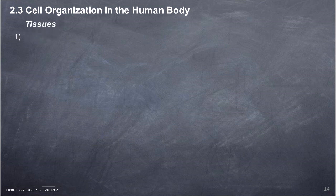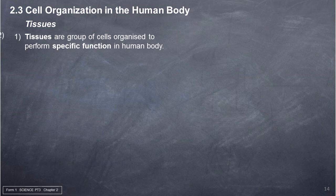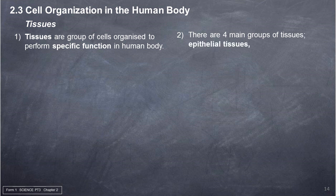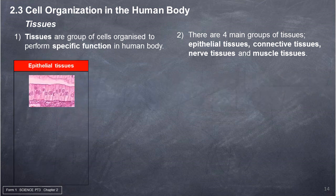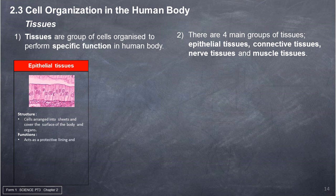Tissues are groups of cells organized to perform a specific function in the human body. There are four main groups of tissues: epithelial tissues, connective tissues, nerve tissues, and muscle tissues. Epithelial tissues — structure: cells arranged into sheets covering the surface of the body and organs. Functions: acts as a protective lining and covering of the surfaces of the skin and organs. Examples: endothelium lining body cavities, and epithelium lining the external surfaces.